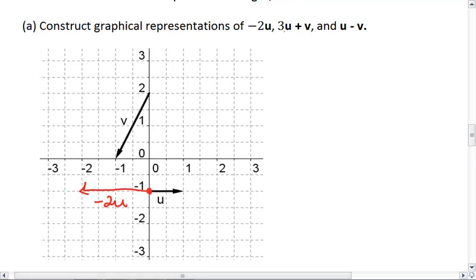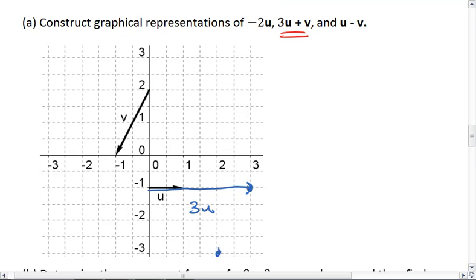Alright, now let's look at 3u plus v. This means I'm going to go in the direction of u, but 3 times that. So I'm going to go 6 units over. That's 3u. Now, I'm going to tack on a v. So v goes 2 over to the left and 4 down. So I'm going to go 2 over and 4 down. There's my v. Thus, the green you see on the screen is 3u plus v.